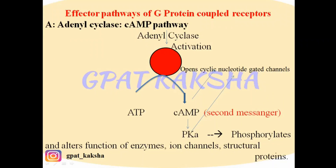In this session of GPED Kaksha, we will learn about effector pathways of G protein coupled receptors. As previously discussed, G proteins are a large family of cell membrane receptors which are linked to the effectors through one or more GTP activated proteins. Now we will discuss how G protein can produce or initiate responses through the effectors via these pathways.